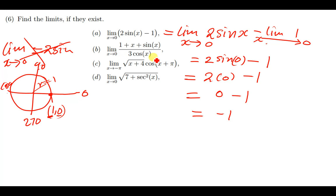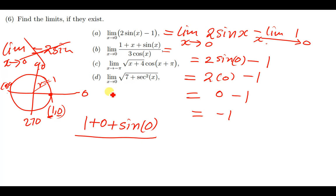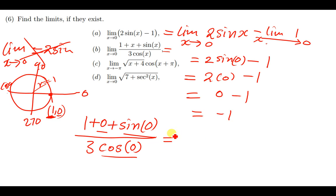The same applies to the next function — we replace x with 0. On top we have 1 plus sin x, and below we have 3 cos x. Substituting: the numerator becomes 1 plus sin 0 plus 0, and the denominator becomes 3 cos 0. Since sin 0 = 0 and cos 0 = 1, the numerator is 1 plus 0 = 1, and the denominator is 3 times 1 = 3. So the answer is 1/3.